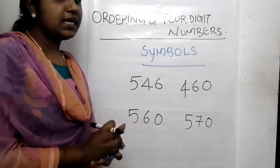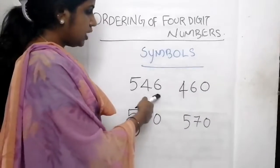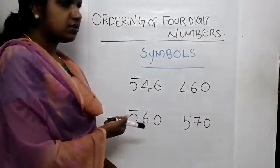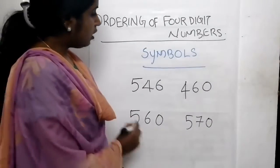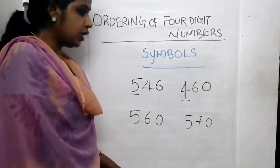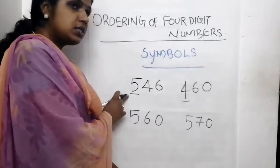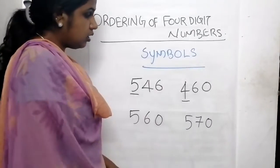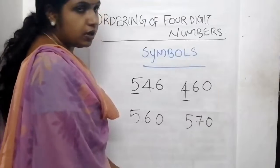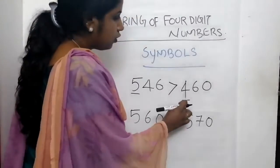Now let's take some three-digit numbers. Read with me: 546 and 460. Which number is smaller and which number is greater? First, look at the first digit. Here it is 5 and here it is 4. We know 4 is smaller and 5 is greater. So 546 is greater than 460.